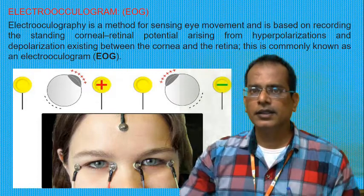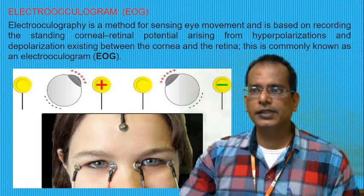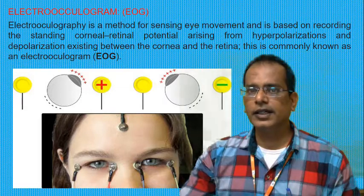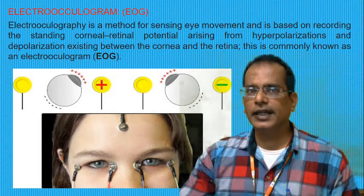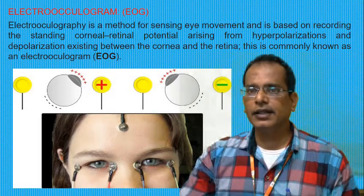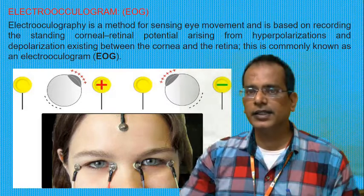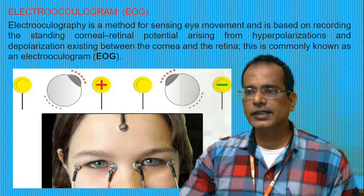The EOG is a method for sensing eye movement and is based on recording the standing corneal-retinal potential arising from hyperpolarization and depolarization existing between the cornea and retina. This is commonly known as the oculogram, with the abbreviation EOG. It is a method of recording eye movements.